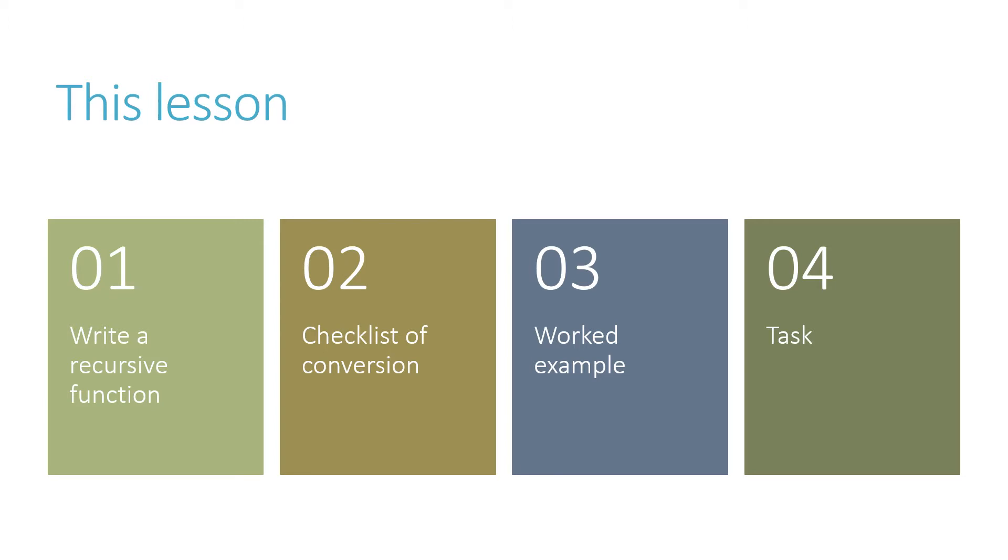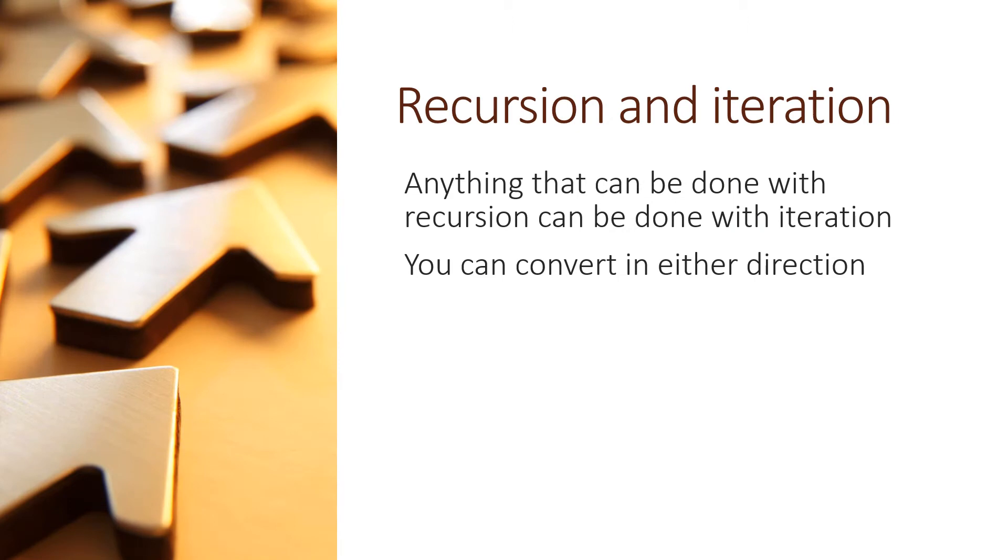In this lesson we'll write a short recursive function, look at the checklist to convert recursion into iteration and use our recursive function as a worked example as we convert it to a function with a while loop. Just a reminder that anything that can be done with recursion can be done with iteration and we can convert in either direction. In this lesson we'll turn recursion into iteration.